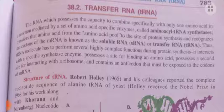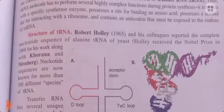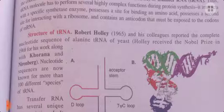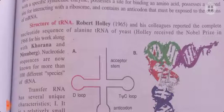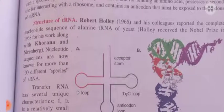Robert Holley in 1965 and his colleagues reported the complete nucleotide sequence of alanine tRNA — meaning they identified which nucleotides are present from 5' to 3' end. They sequenced the alanine tRNA, which is the tRNA attached with the alanine amino acid at the acceptor arm on the 3' side. For this work, they received a Nobel Prize in 1968, shared with two other scientists: Hargobind Khorana and Nirenberg.